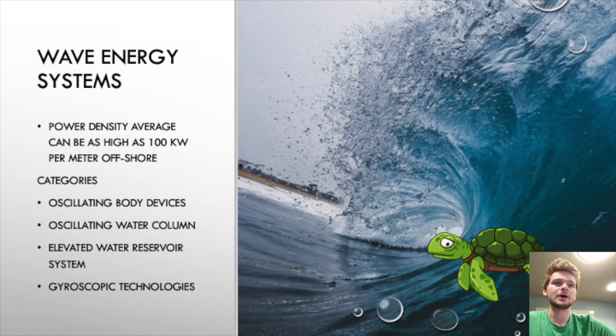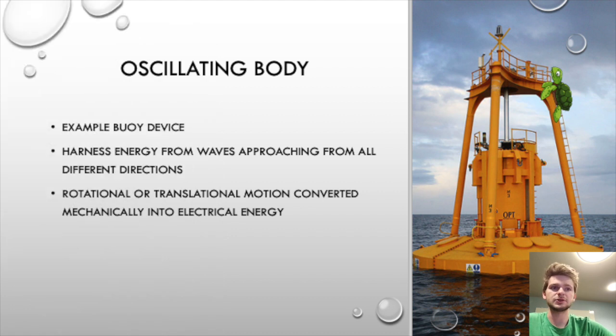We'll start out with oscillating body technologies. This is just one example of an oscillating body device—this one is a translational motion one where it bobs up and down as the waves come. It's anchored to the ocean floor, and the cool thing about this device is that waves can approach it from any direction, so the fact that it's omnidirectional makes it advantageous. There are other devices that are considered oscillating body devices which use rotational motion rather than strictly translational motion. One of the most famous examples is the Pelamis wave absorber.